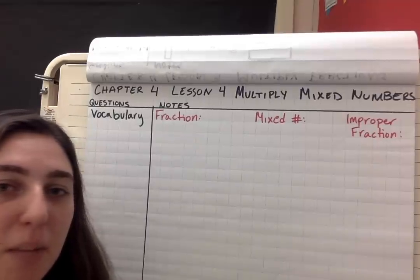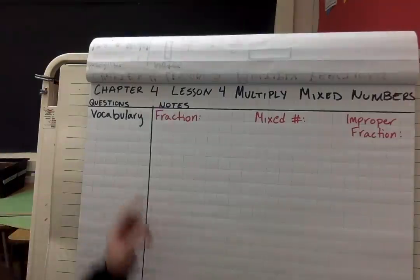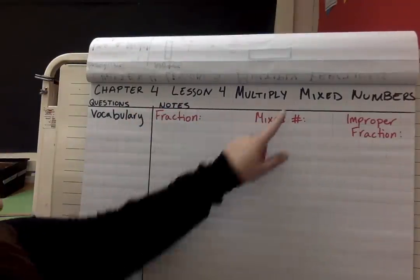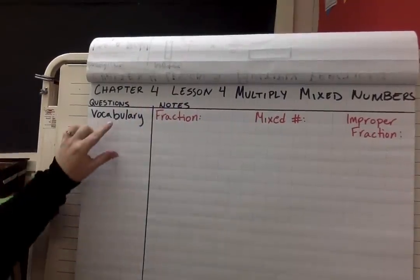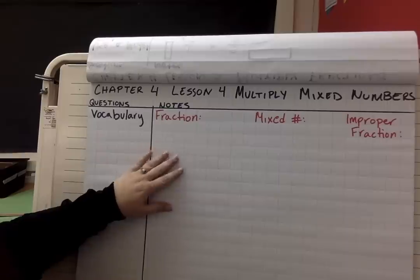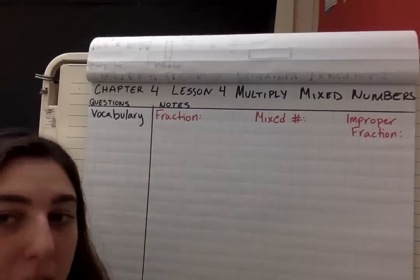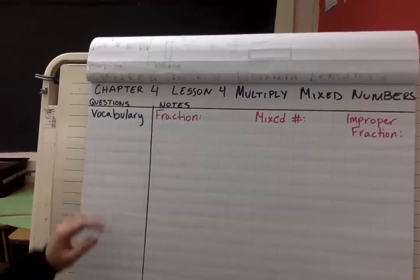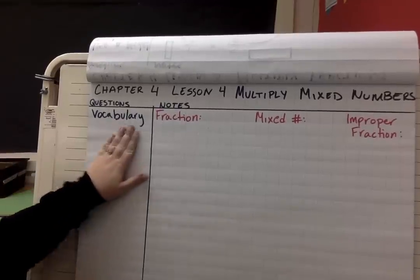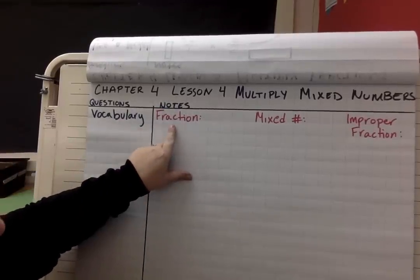Hey everyone, so today we are going to be learning from Chapter 4, Lesson 4: Multiply Mixed Numbers. The title's at the top — go ahead and write it down on your focus notes. We have our questions column and our notes column. Before we even start with the lesson, I want to start off with some vocabulary. Go ahead and write vocabulary in this column and then set up your notes.